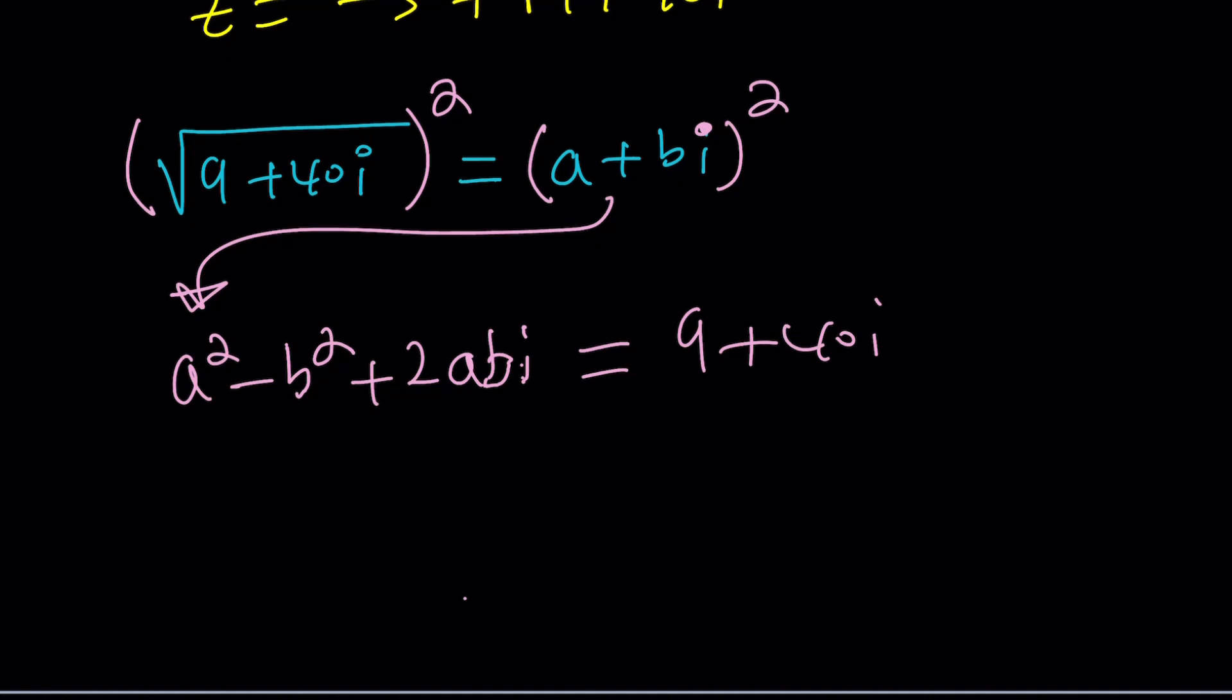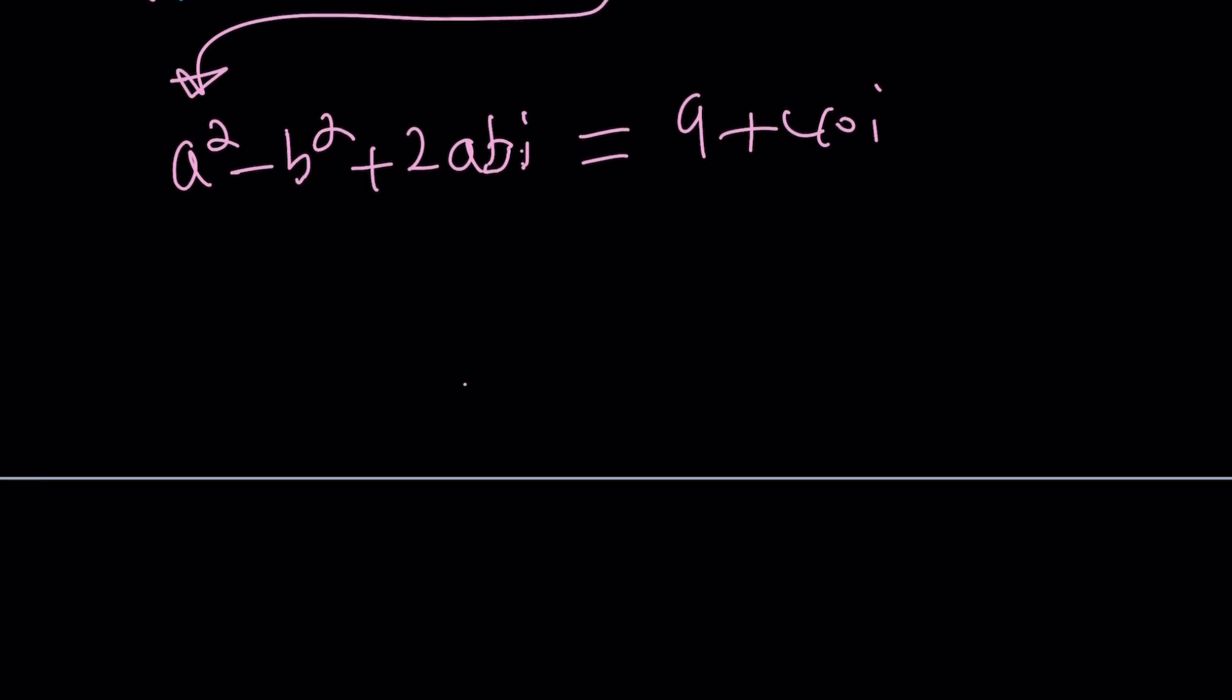So from here, by comparing these two numbers, we arrive at the following result. Comparing the real parts and imaginary parts. So let's go ahead and do this. This should be 9. And this should be 40. Which means a squared minus b squared is equal to 9. And ab is equal to 20.